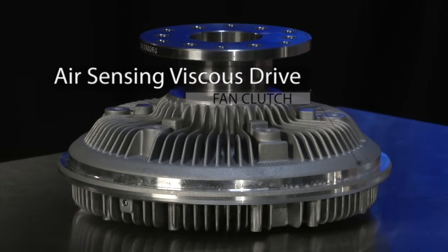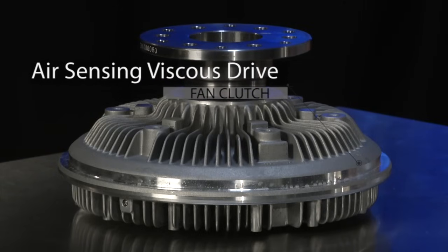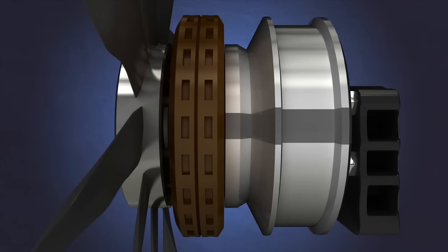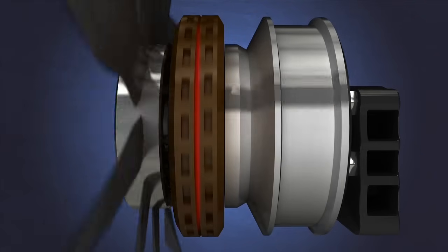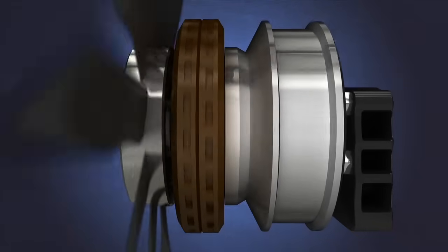All pulley driven fan clutches may be thought of as two components. One component that rotates with the pulley, called the drive portion, and the other half that independently rotates with the fan blade, called the driven or clutch portion.